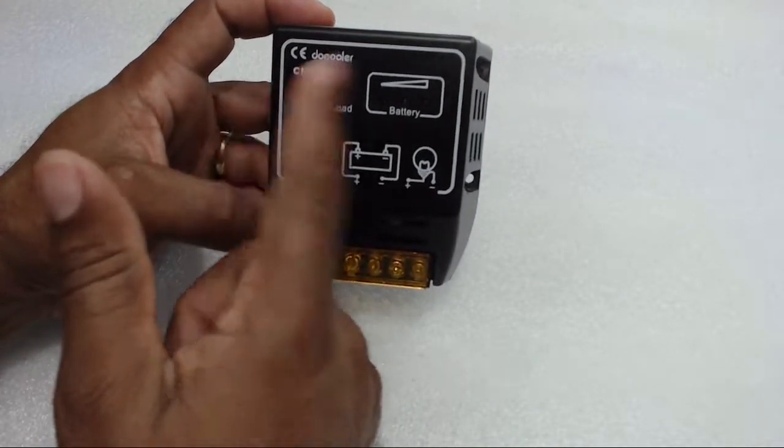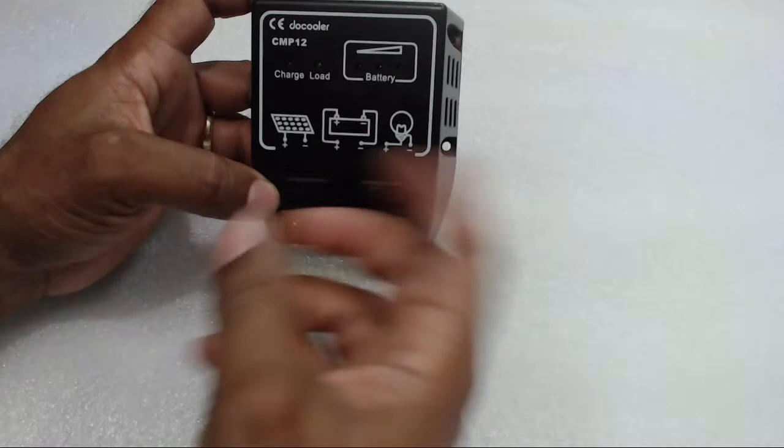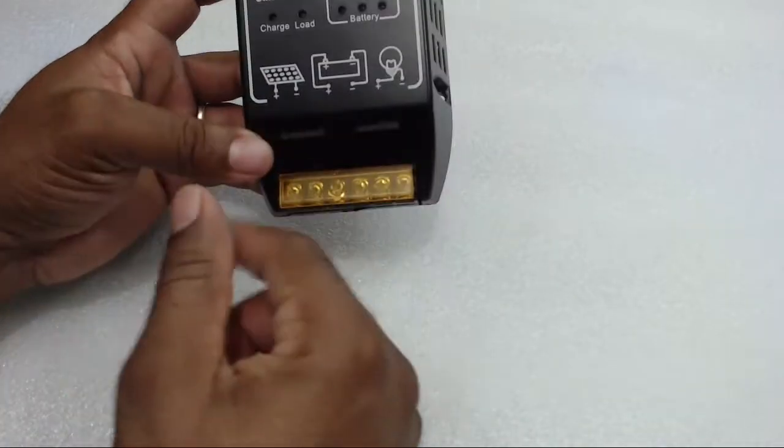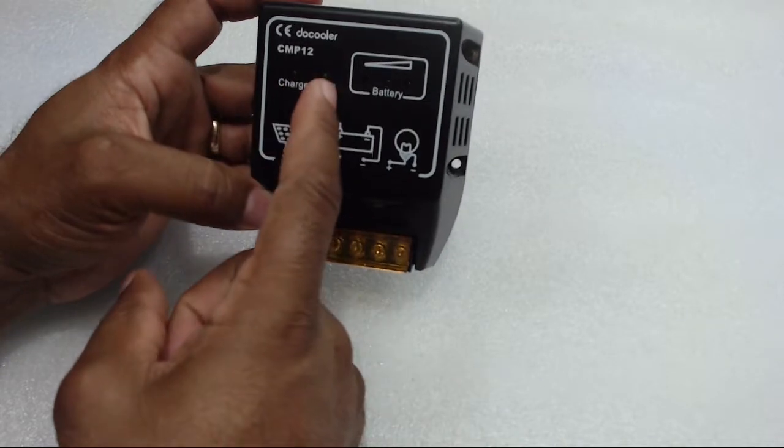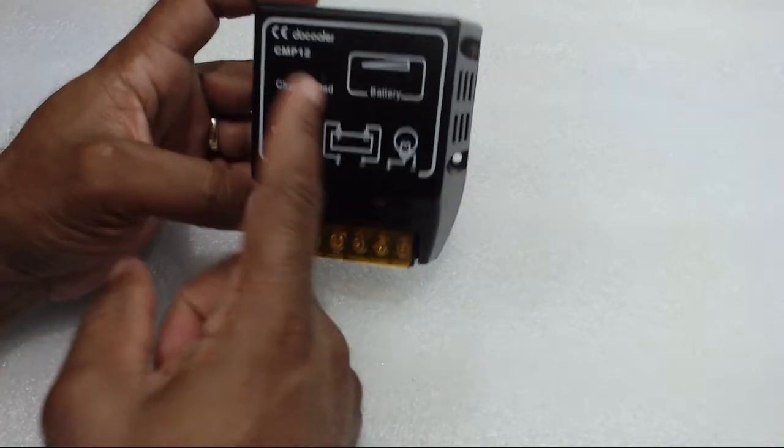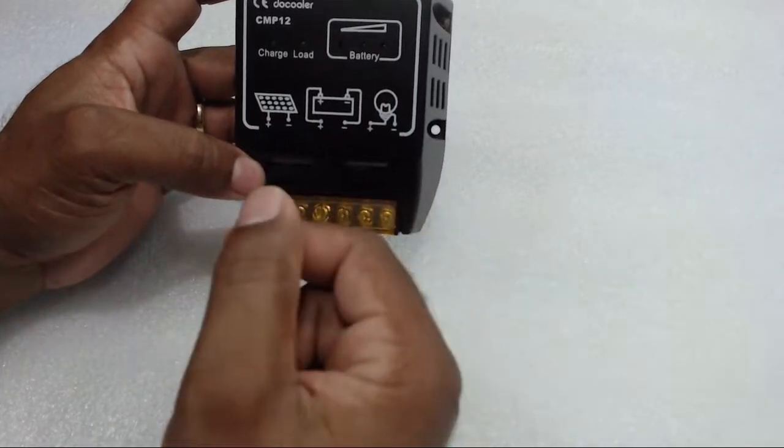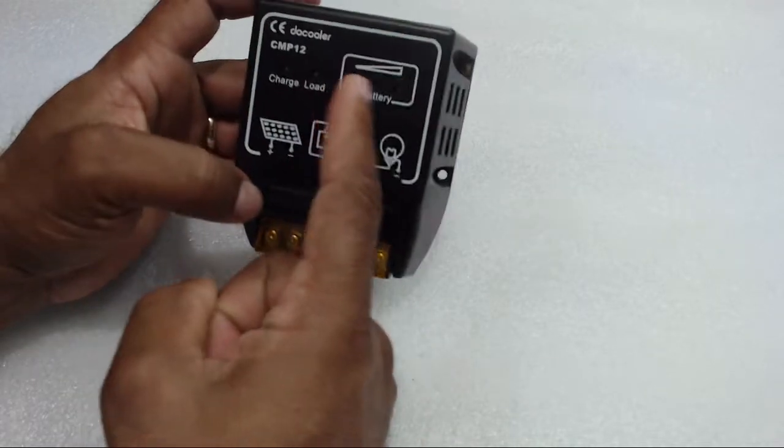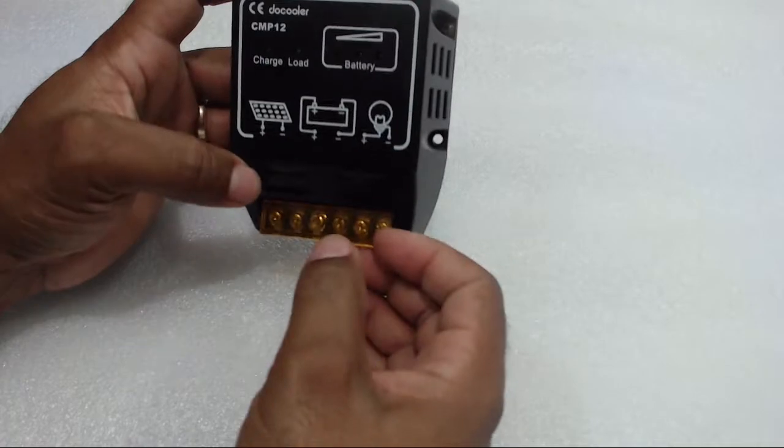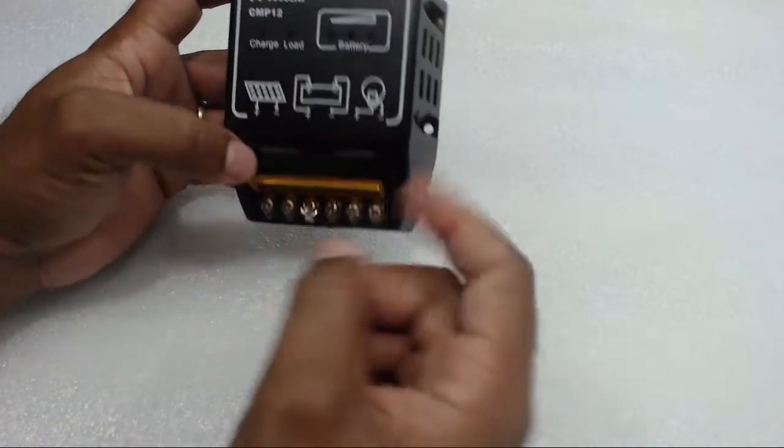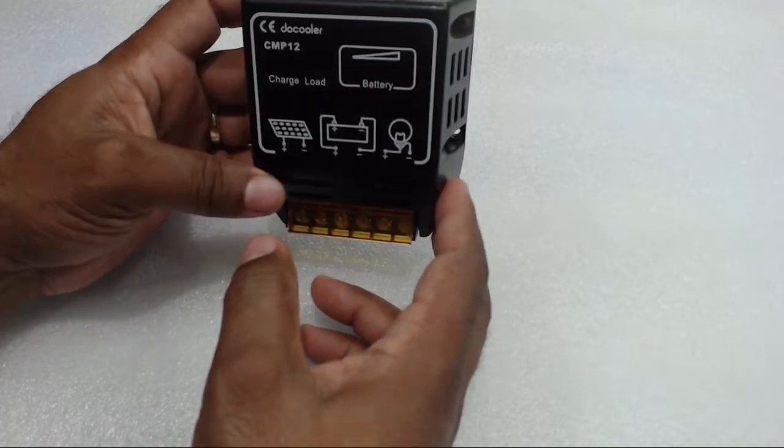You got the green light here which will show that there's a charge coming in, your panel is charging, sending power in. It got another green light here shows that your load is on, and it got three red ones here which shows the battery level, how much voltage your battery got.